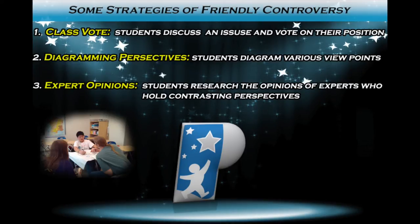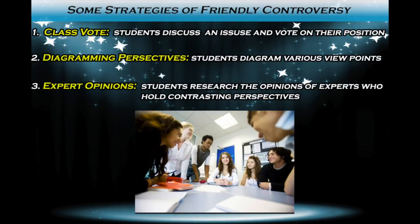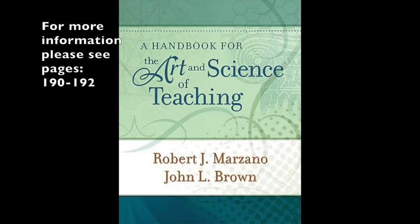Second, diagramming perspectives: students use a graphic organizer, such as a Venn diagram, to compare various points of view. The diagram might highlight areas of congruence and areas of disagreement between two or three ideas. Third, expert opinions: students research the opinions of experts who hold contrasting perspectives about a particular issue or topic. The class then discusses the merits of the various perspectives and the validity of the experts' ideas, positions, and evidence.